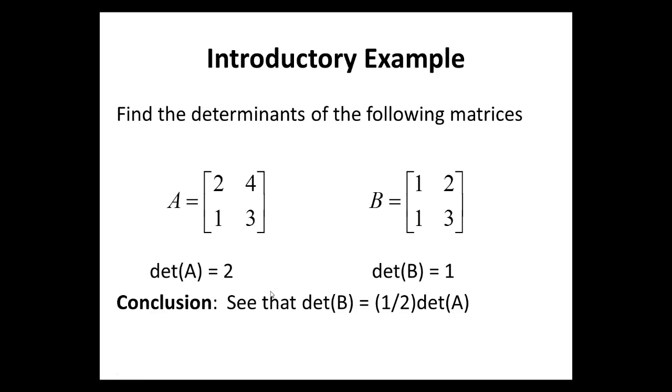Well, the determinant of A is 2 and the determinant of B is 1. Now, observe that the determinant of B is 1 half the determinant of A. Again, what operation did we perform on A to get B? We multiplied row 1 by 1 half.